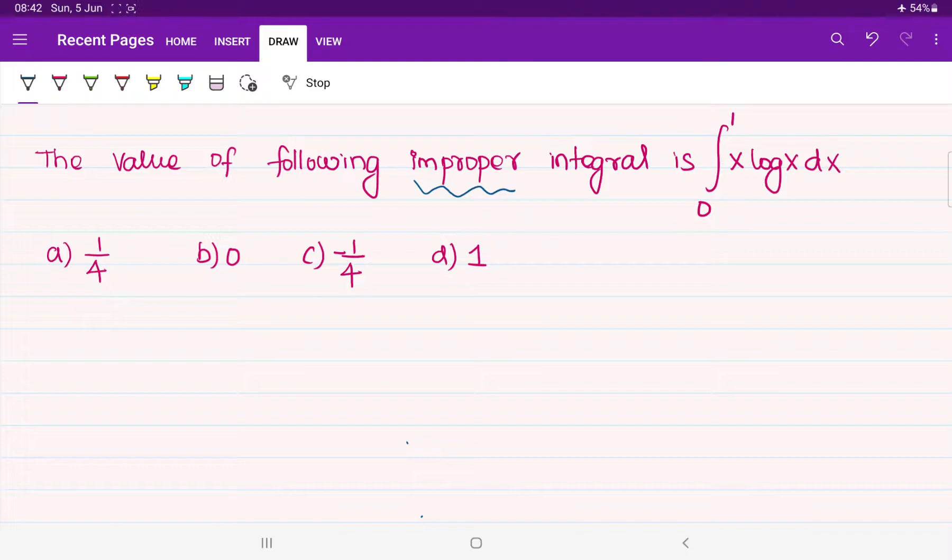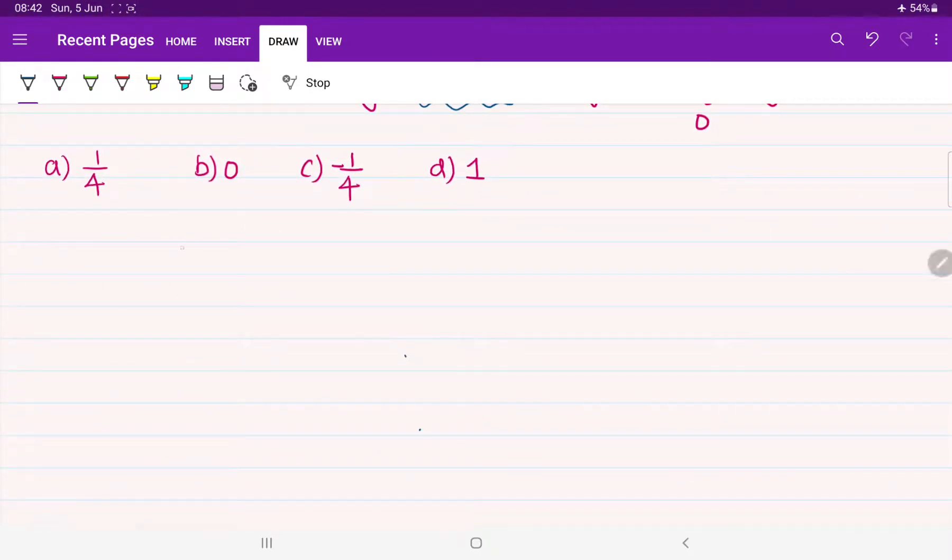Some of you might be having clarity about it, some of you might not. Because already we saw the difference between definite and indefinite integral. If limits are given, then that is called definite. If the limits are not given, then that is called indefinite because the limits are not definite in that function.